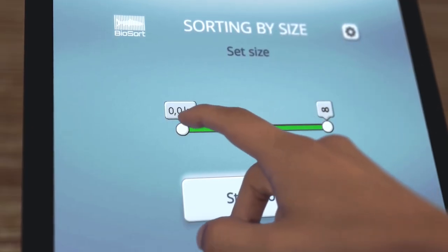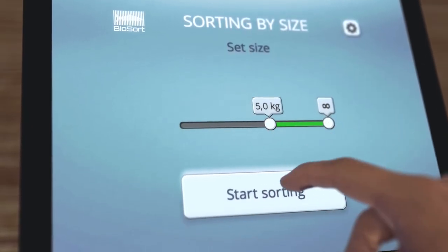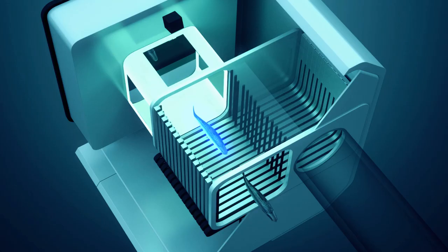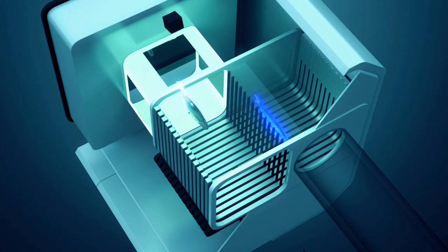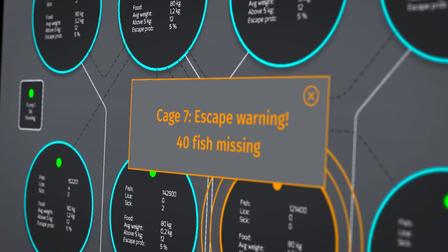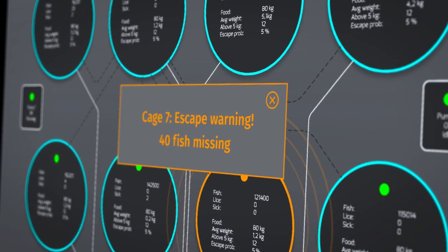iFarm can sort fish by weight and size. Fish above 5kg can be sorted to a separate cage for processing. A warning system detects if fish are missing and makes immediate action possible.